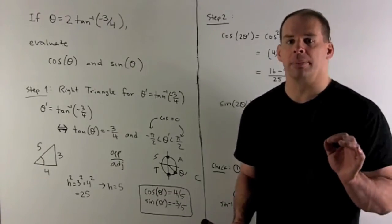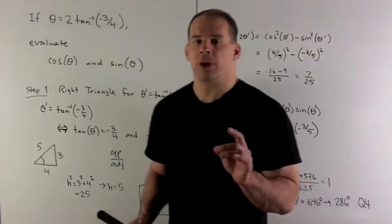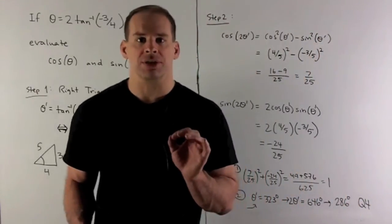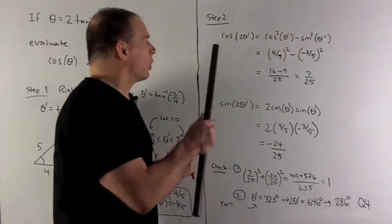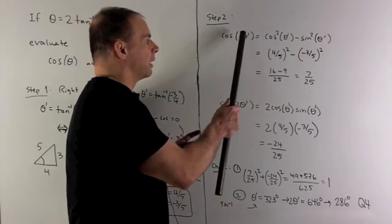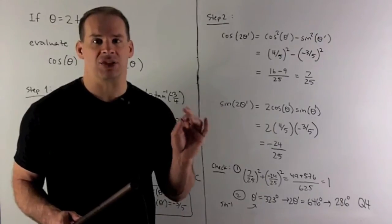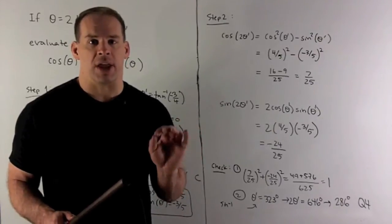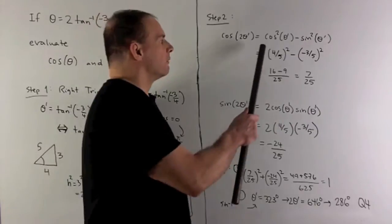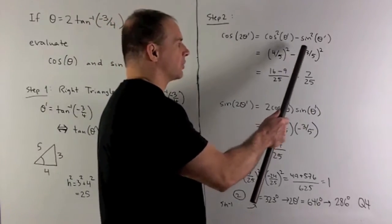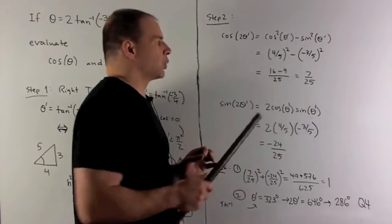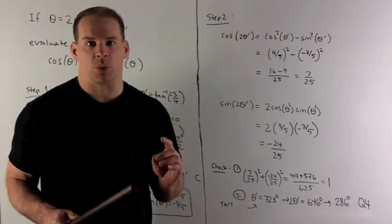For the next part, we're just going to use the double-angle formulas. So what do we have? I'm going to have cosine of two theta prime is just cosine squared of theta prime minus sine squared theta prime. So now I just stick in. So I have four-fifths squared minus three-fifths squared. That gives me 16 minus nine over 25, and I get seven over 25.